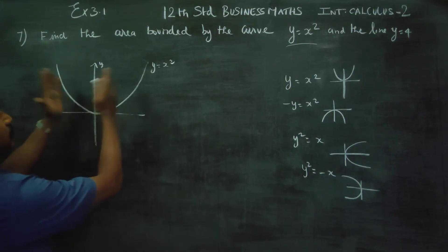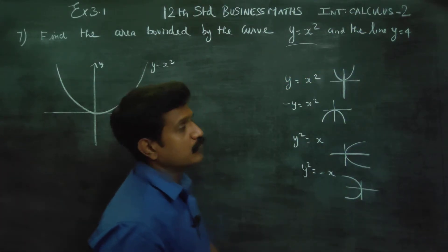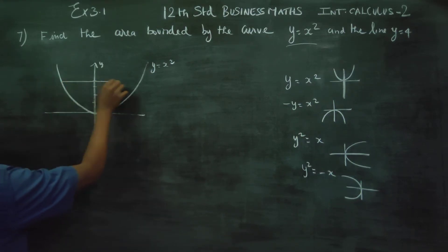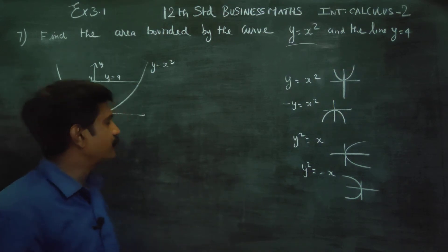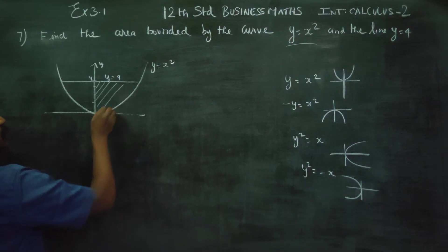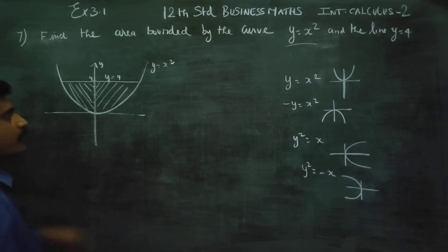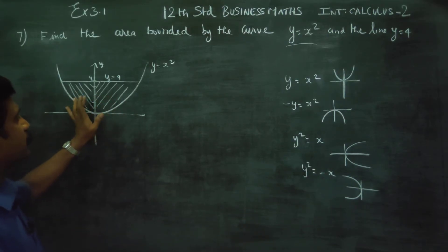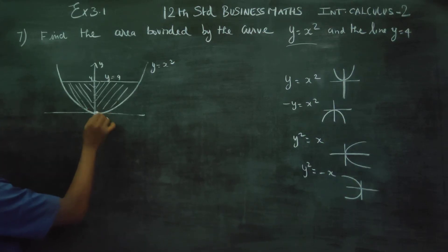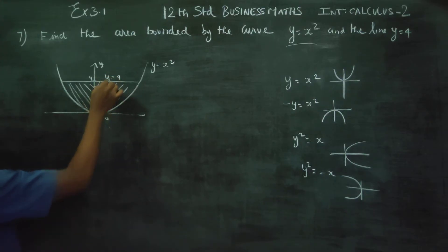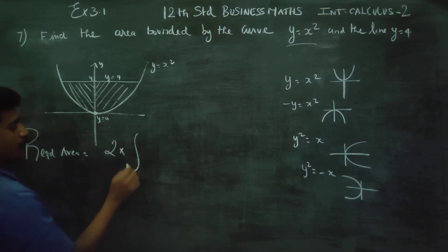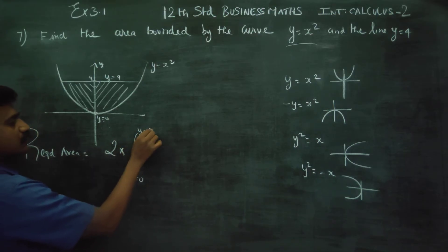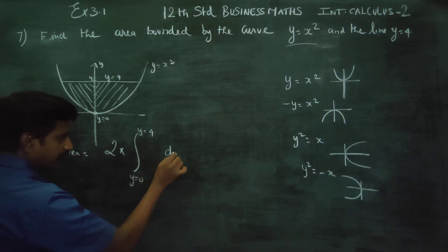Y is equal to 4. Y is equal to 0, y is equal to 4. Integration from y is equal to 0 to y is equal to 4. The required area is equal to 2 times the integration from 0 to 4.